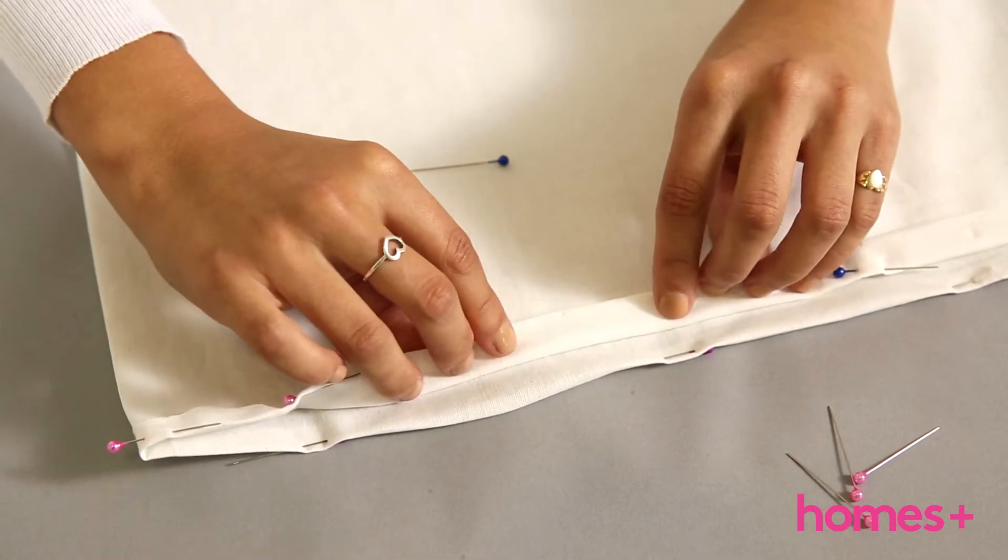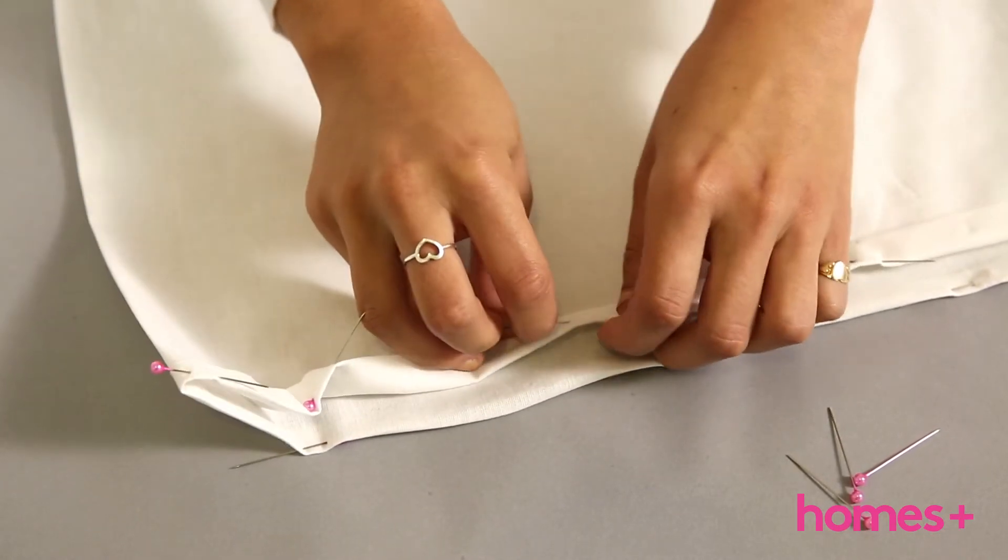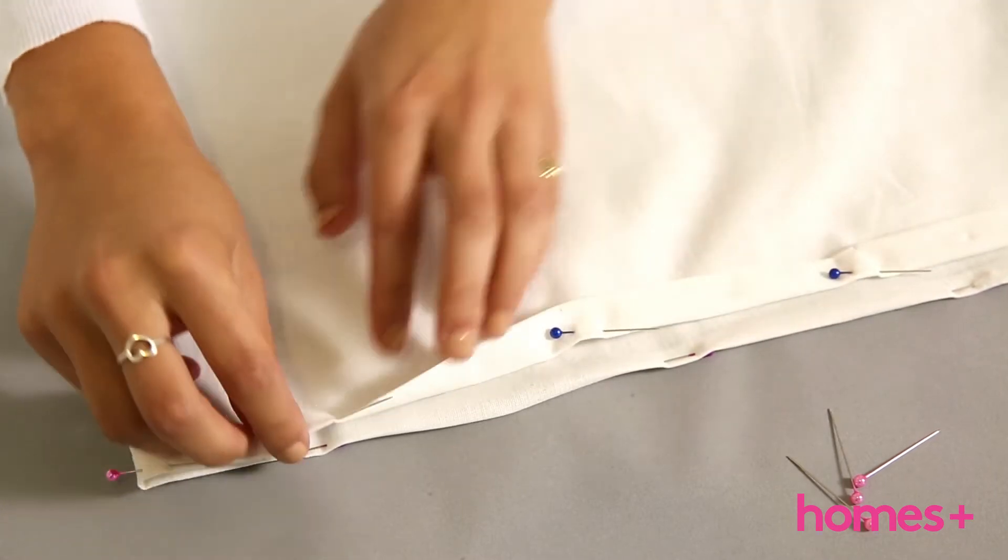Step 3. Fold the same edge over again just wider than the width of your ribbon. Pin and iron flat.